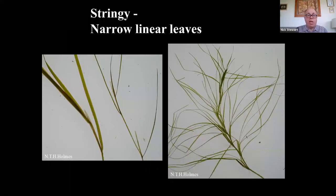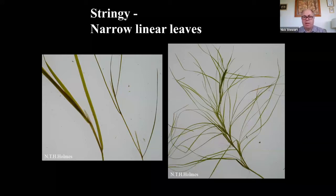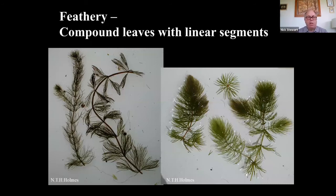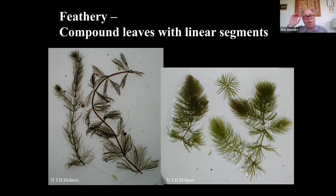The second group is stringy species — basically linear, narrow-leaved species, sometimes rather grass-like. The key thing is that they have undivided leaves that are very narrow and thin. Group three is the feathery group. Instead of simple individual leaves, the leaves in this group are divided in various different ways into lots of leaflets.